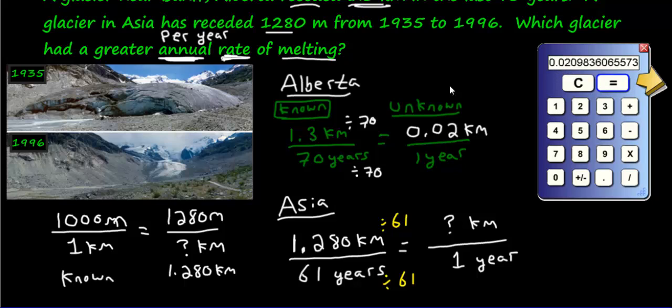Now look at this. We have another 0.02, but it's a little bit different. This is 0.0209. What was this one again? Let's get the exact numbers. We had 1.3 divided by 70. We had 0.018. Let's write the exact value just to compare. We had 0.0185.